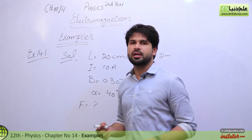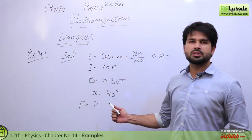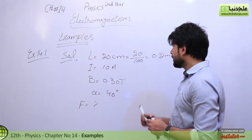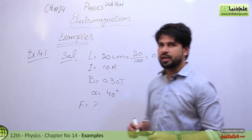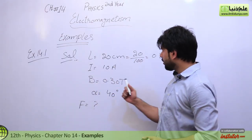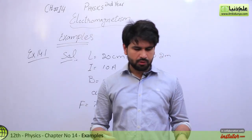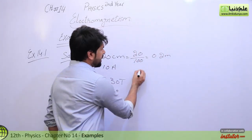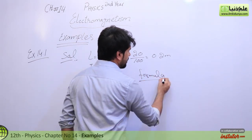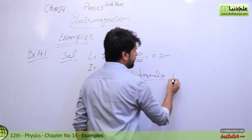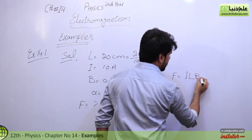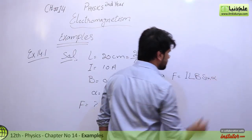The unknown is the magnetic force — the force due to the magnetic field. We need to find the formula. The formula for a force on a current-carrying conductor is: F equals I L B sin alpha.